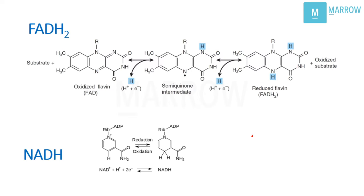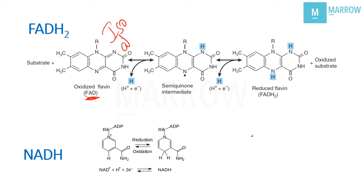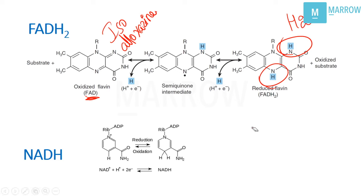We have to see why FADH₂ is written as FADH₂ and NADH is written as NADH and H⁺. See the structure of FADH₂ — this is your FAD, oxidized flavin. It contains an isoalloxazine ring. Two hydrogen atoms are incorporated into this ring, so it is H₂. That is why FADH₂ is written in that way.